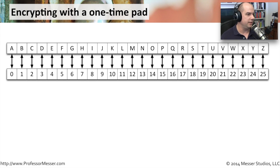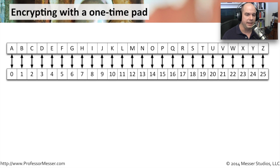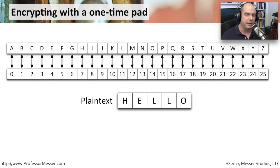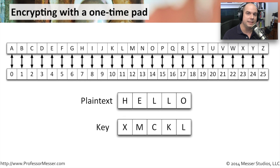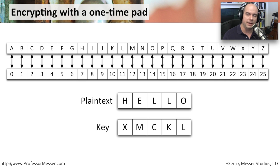The first thing we do is put our entire alphabet down and assign every letter a number. The easy way is to start at zero with A and end at 25 with Z — these are the numbers we'll use to perform our calculations. Now let's take a plaintext message like the word 'hello' that we'd like to encrypt. To encrypt it, we also need a key, and as we recall, the key must be exactly the same size as the plaintext. Looking at our one-time pad, our key in this case is XMCKL — a random set of letters.